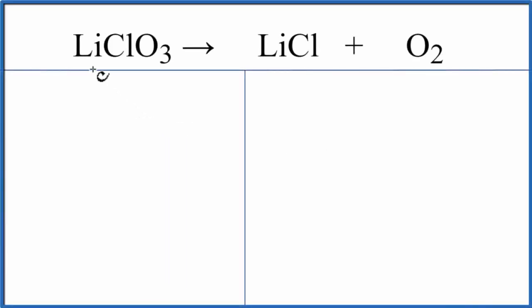In this video, we'll write the balanced equation for LiClO3, lithium chlorate, decomposing into lithium chloride and oxygen. Let's add the atoms up on both sides. Lithium, we have one. Chlorine, we have one. And oxygen, there are three.